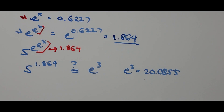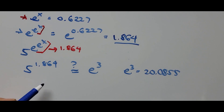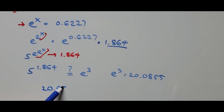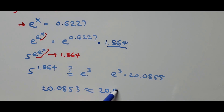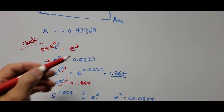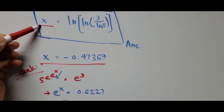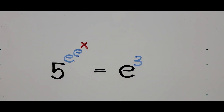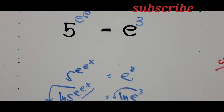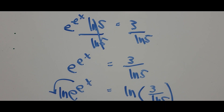Checking: 5 to the power of 1.864 equals 20.0853, which is approximately equal to 20.0855. We have confirmed that the value of x is correct. This is the approximate value, and x equals ln(ln(3)/ln(5)) is the exact value. That's all for now — if you're new to my channel, please hit the like button and subscribe for more videos. Thank you for watching, have a great day everyone, see you in the next video!